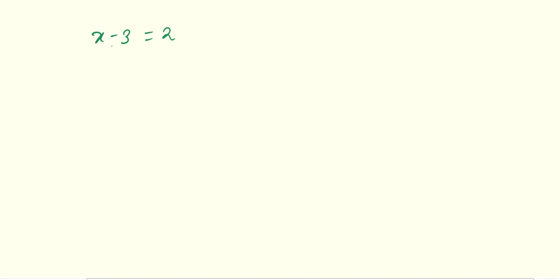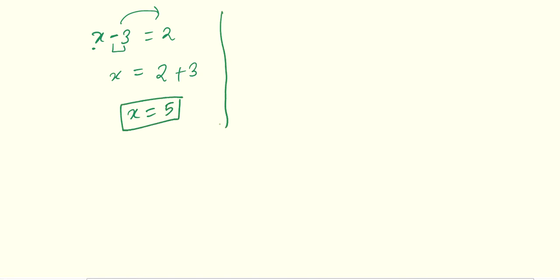Now for question number 2 of the subtraction section. The only difference from the addition questions is the negative sign. The first question is x minus 3 equals to 2. Your variable is x. Transposing minus 3 to the right hand side, it becomes plus 3. So x equals to 2 plus 3, which gives x equals to 5.